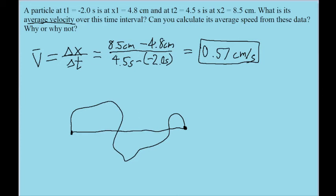So the answer to the question is no, we cannot calculate the average speed from this data. And as for the reason why, it's because to calculate the average speed, we need to know the actual distance traveled, and not just the beginning and final position. Because we don't know what it could have done in between.